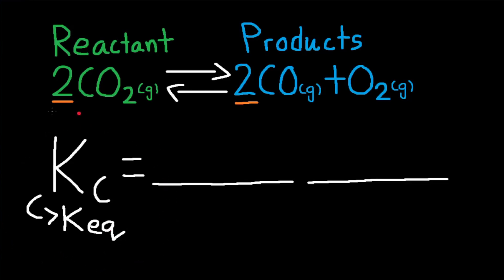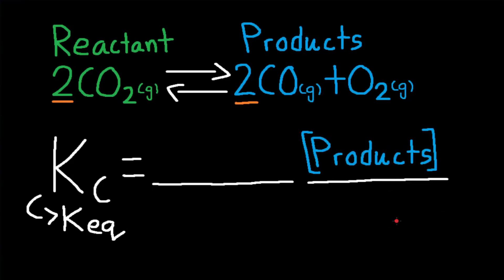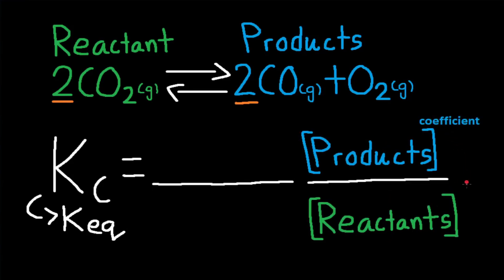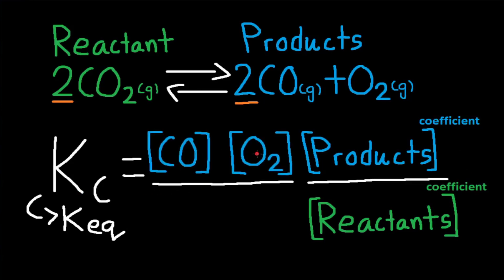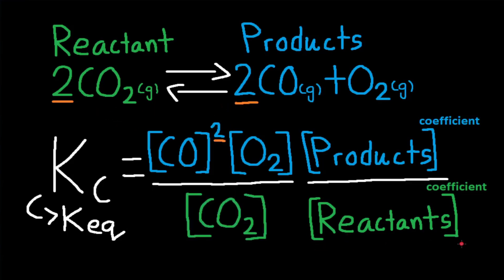To write equilibrium constant expressions, just remember concentration of products divided by concentration of reactants, and coefficients become exponents. This means Kc is equal to CO multiplied by O2, as these are the products. CO has a coefficient of 2, so it has an exponent of 2. This is then divided by CO2, as this is the reactant. CO2 has a coefficient of 2, so it has an exponent of 2. This reaction is considered homogeneous since everything is in the same phase as gases.